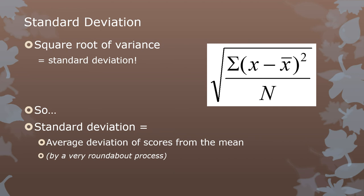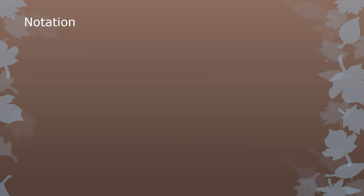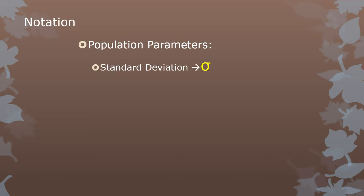The formula for standard deviation: calculate the variance and then take the square root of the whole thing. Get a variance — a single number — and take the square root. Flipping back and forth between standard deviation and variance is easy: square one or unsquare it. The standard deviation of a population is indicated by a lowercase sigma, and the variance of a population is lowercase sigma squared — mathematically it is the standard deviation squared.